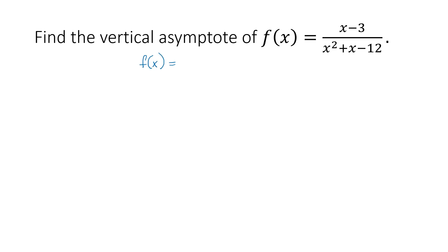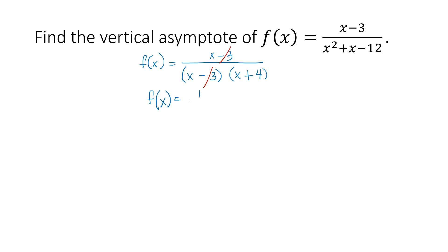So f(x) = (x − 3) over the factored denominator. Factors of x² are x and x. Factors of 12 by trial and error are 3 times 4. Since it's negative they have different signs, but the middle term is positive, so the greater factor 4 is positive and 3 is negative: (x + 4)(x − 3). We may cancel out (x − 3), and what's left is f(x) = 1 / (x + 4), because (x − 3) divided by (x − 3) equals 1.